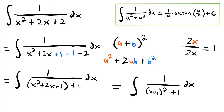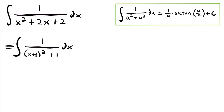Now let's identify each part of this integral as it pertains to the integration rule. Our constant a is equal to 1, since that 1 can be viewed as 1 squared, and 1 squared is a². So a = 1. Then u is equal to x + 1, because that is the function of x being squared in the denominator. So u = x + 1.